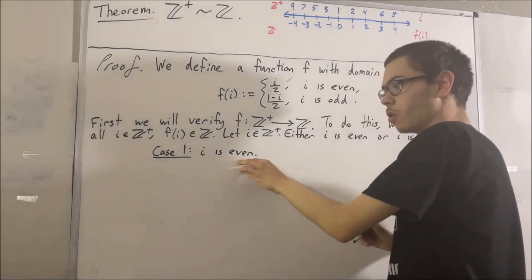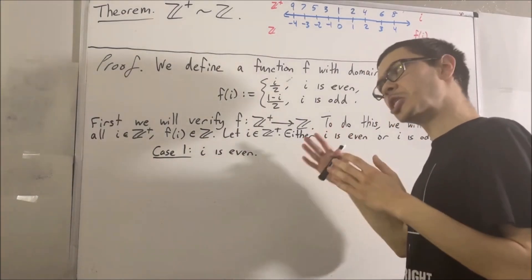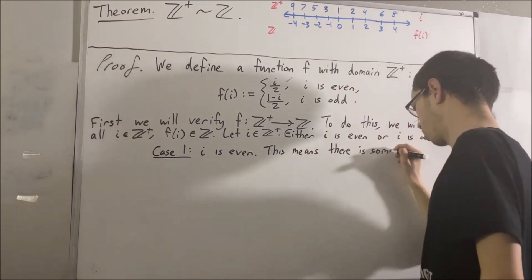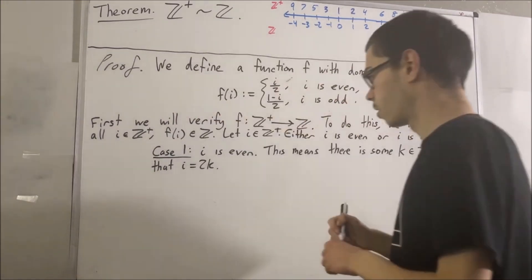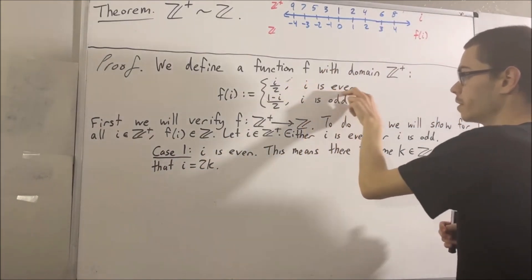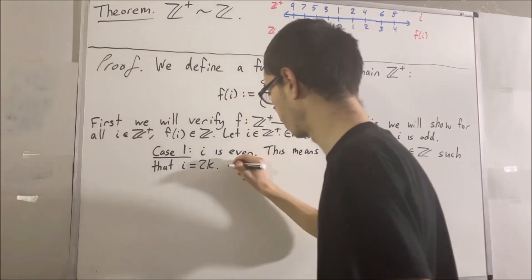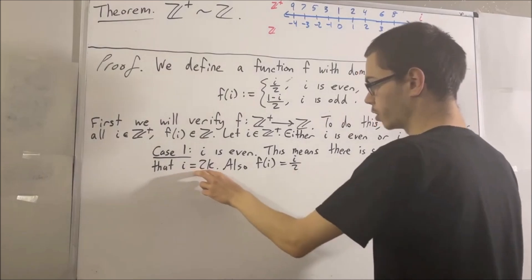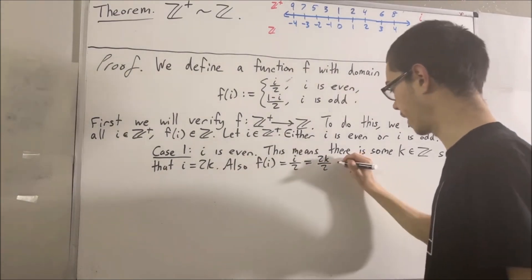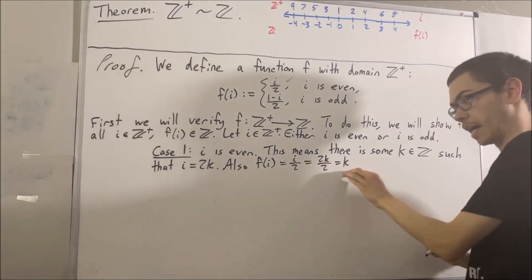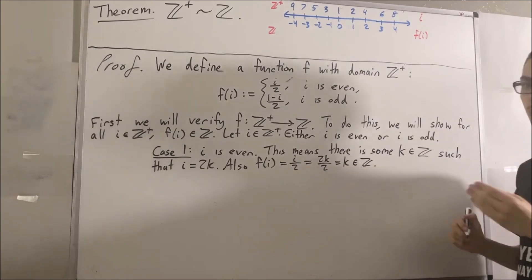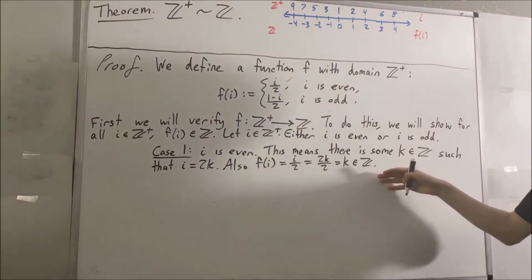What does it mean for i to be even? It means that there is some integer k such that i is equal to 2k. Because i is even, when we send i into the function f, f of i is assigned to i over 2. Since i is equal to 2k, we can replace i with 2k, and 2k over 2 simplifies to k. So we see that f of i is equal to k, which is an integer — exactly what we wanted to show. That covers the case where i is even.